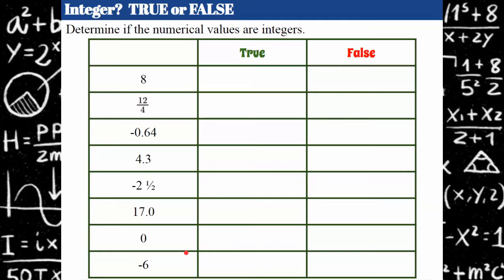Welcome back. Let's see how you did. So eight is a whole number, it's a counting number, it's an integer. Twelve over four simplifies to three — twelve divided by four is three, and three is an integer. Negative zero point six four, or negative sixty-four hundredths, cannot simplify to an integer — it's always going to be part of a whole. Four point three is in simplest form and not an integer. Negative two and one half is not an integer, cannot be written as a whole number or its opposite. Seventeen point zero can be written as seventeen, so that's an integer. Zero is an integer, and negative six is an integer.